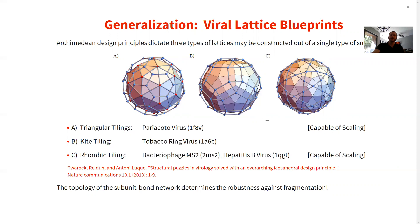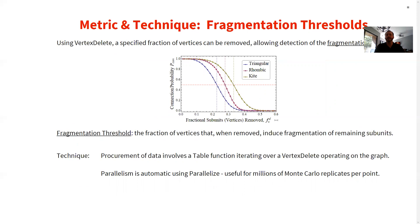You'll notice that the triangular tiling on the left and the rhombic tiling on the right are both fundamentally composed of triangular components — the rhombic tiling essentially has each rhombus as two triangles. We'll come back to the ability of these lattices to be further triangulated such that they can scale in size by adding more pieces while still adhering to the overall triangular or rhombic trend. The topology of this lattice determines the propensity for fragmentation and the robustness against fragmentation.